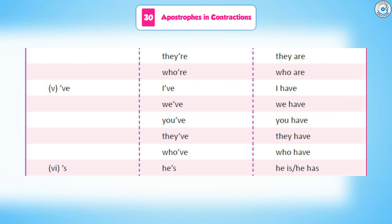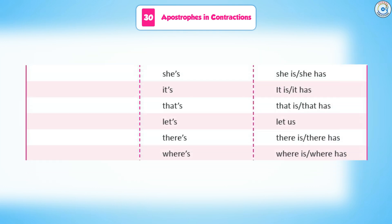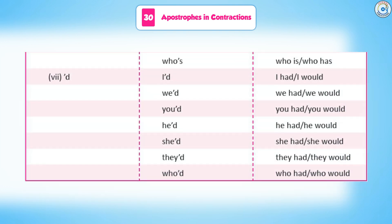Apostrophe + 's' contractions: he's (he is or he has), she's (she is or she has), it's (it is or it has), that's (that is or that has), let's (let us), there's (there is or there has), where's (where is or where has), who's (who is or who has).